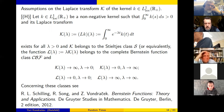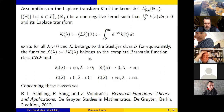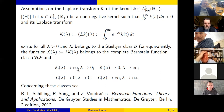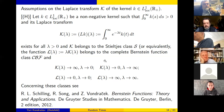We assume that this function k, whose Laplace transform is denoted K-calligraphic, belongs to the Stieltjes class, or equivalently that λ times K-calligraphic(λ) belongs to the class of complete Bernstein functions, with specified asymptotic behavior as λ → 0 and λ → ∞. This class of complete Bernstein functions is a very large classical class in analysis. Bernstein, by the way, was a Ukrainian mathematician from Kharkiv.